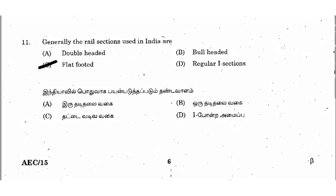Continuing with the TNPCAE 2015 question paper — already 10 questions discussed. The 11th question asks: generally, the rail section used in India is double headed, bull headed, or flat footed? The right answer is option C: flat footed. India uses the flat footed rail section.